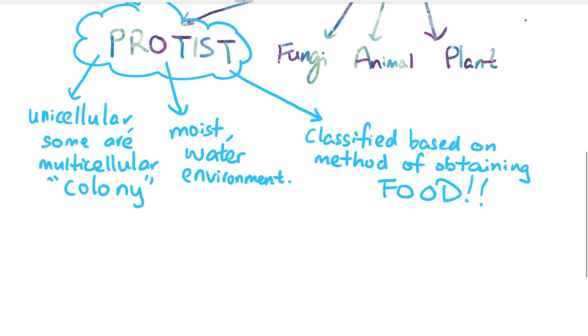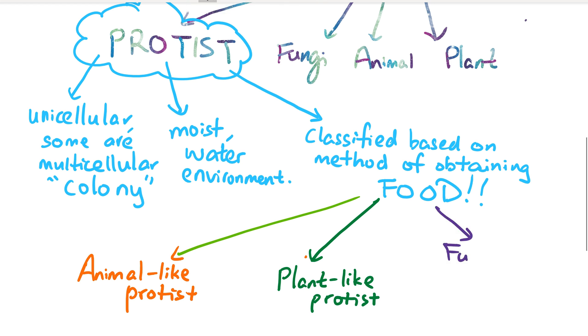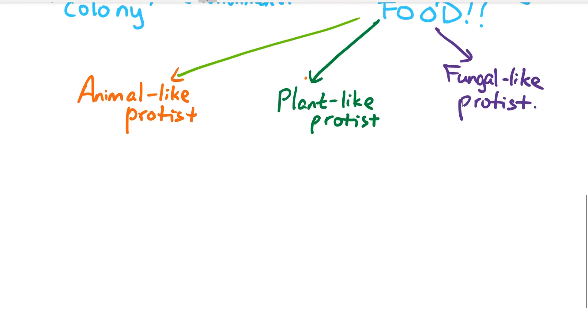The first type is animal-like protists, which get their food like an animal. The next is plant-like protists, which generate food from photosynthesis. The last is fungal-like protists, which get material from organic matter. Animal-like protists are heterotrophs, meaning they cannot generate their own food and have to obtain food by absorbing other food molecules. They can be classified by how they move around.